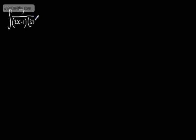Let's look at an example of that. Let's take the integral of 7 over the quantity 2x minus 1 multiplied by the quantity 3x plus 2. We want to integrate this with respect to x.